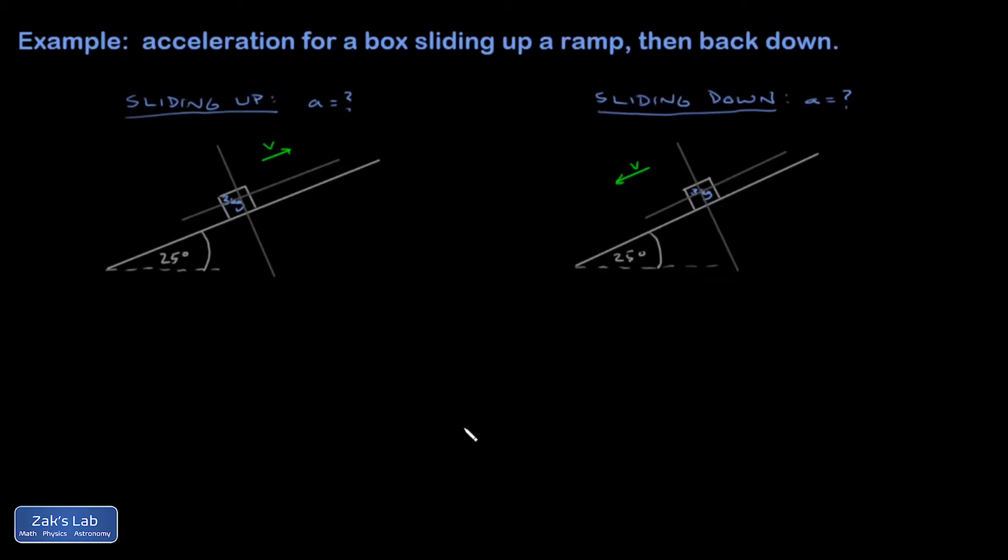In this example, I have a box sliding up a ramp and slowing down, and then it turns around and comes back down the ramp.